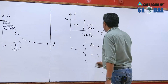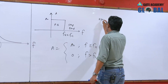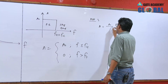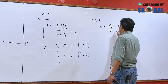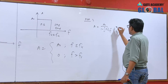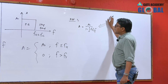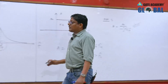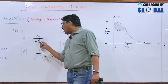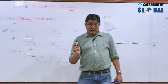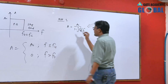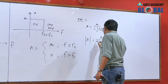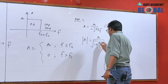In case of a high pass filter, the frequency response of a high pass filter is given by A0 upon (1 minus j·FL upon F). This frequency response is very important. The magnitude of A is A0 upon under root (1 plus (FL/F) squared). The magnitude at F=0 is 0, at F=FL is A0 by root 2, and at F=infinite is A0.